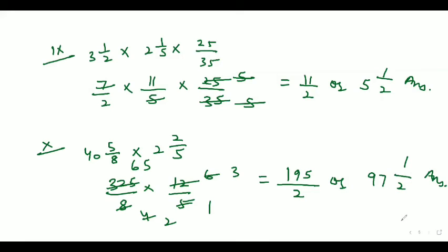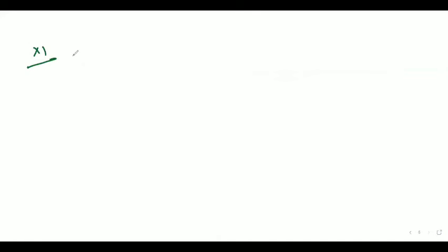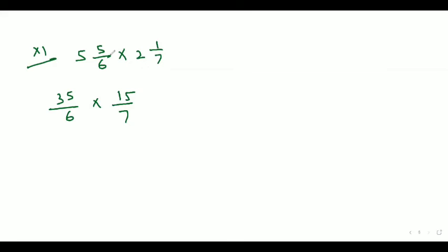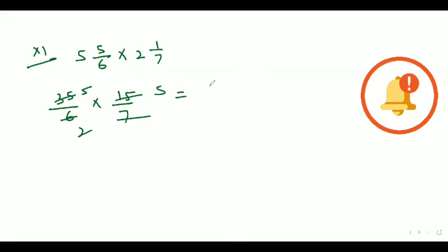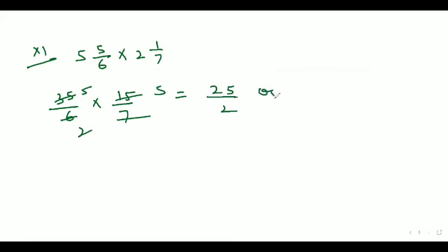Now let's move to the eleventh part. The eleventh part is 5 whole 5/6 into 2 whole 1/7. It can be written as 35/6 into 15/7. After cancellation, the answer comes out as 25/2 or 12 whole number 1/2.